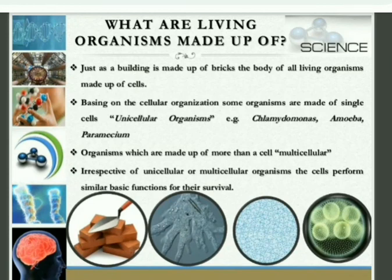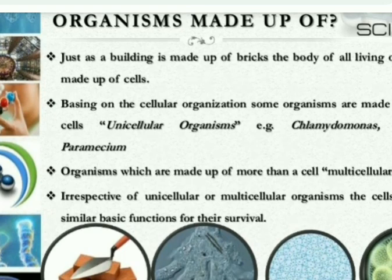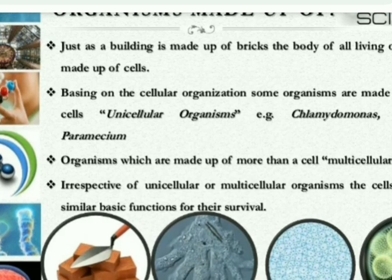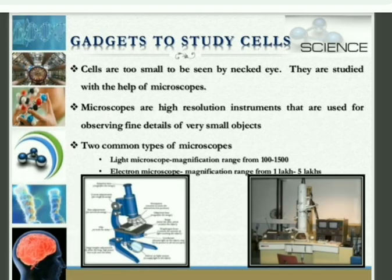Now, what are living organisms made up of? As I have told, they are made up of cells — just as a building is made up of bricks, living organisms are made up of cells. Unicellular organisms — also called single-celled — examples are amoeba, paramecium, and chlamydomonas. Then organisms which are made up of more than one cell are called multicellular, such as plants and animals. Cells perform different work assigned to them.